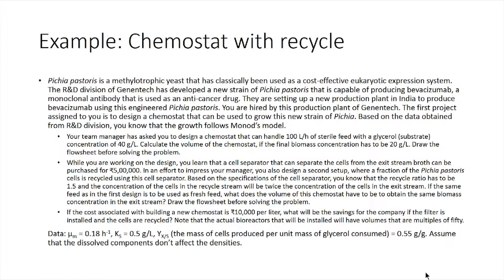Let us go to this example problem. Pichia pastoris is a methylotrophic yeast that has classically been used as a cost-effective eukaryotic expression system. The R&D division of Genentech has developed a new strain of Pichia pastoris that has the capability of producing Bevacizumab, a monoclonal antibody that is used as an anti-cancer drug. They are setting up a new production plant in India to produce this drug using the engineered Pichia pastoris.